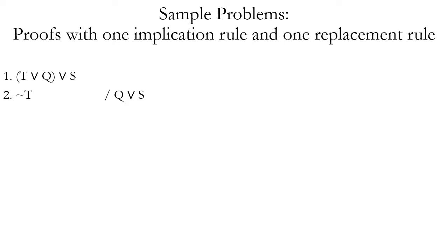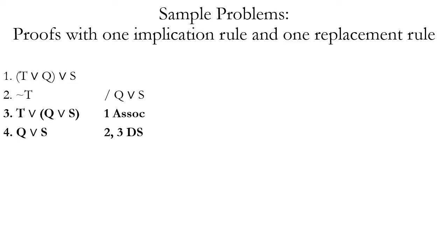Another sample problem: our conclusion is Q wedge S. Our premises also have the simple proposition T, so we want to use rules to eliminate that. Q wedge S do occur together on line 1, but they're separated by parentheses. We can use the association rule to shift those parentheses and group Q wedge S together. Association only applies where you have a disjunction one of whose disjuncts is another disjunction, or a conjunction one of whose conjuncts is another conjunction. Then we use disjunctive syllogism — going from a disjunction and the negation of one disjunct to proving the other — to derive our conclusion.